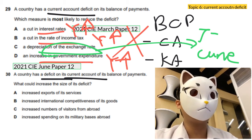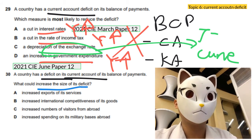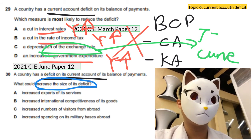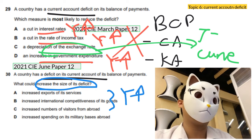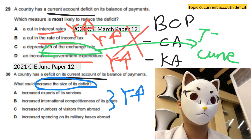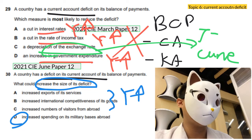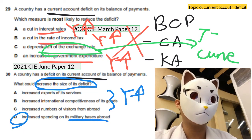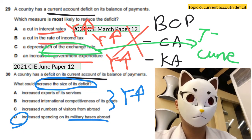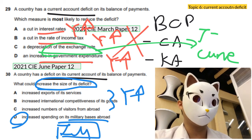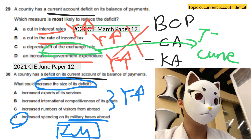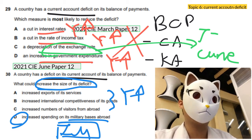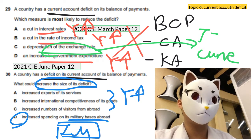Another tricky question asks about increasing the size of the current account deficit. Options A, B, and C all relate to increasing income, so they can be eliminated. The answer goes to D: a foreign military base spending on goods locally is regarded as an import. The key trick is to eliminate all options related to income.